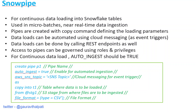Snowpipe can be used for continuous data loading. For example, let's say you have some IoT sensors sending data that lands a file onto your AWS S3 storage every five minutes. Now you don't want to keep manually running your COPY command to load that data into Snowflake every time a new file arrives.